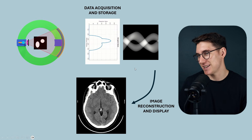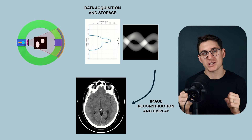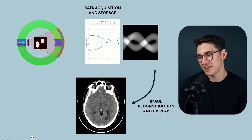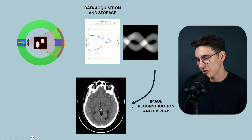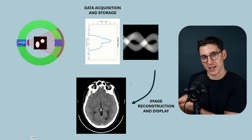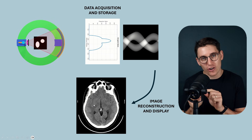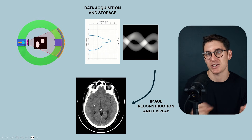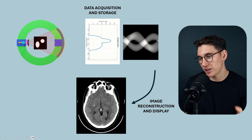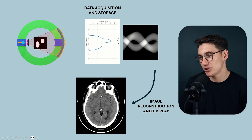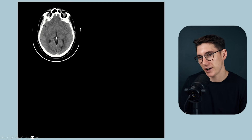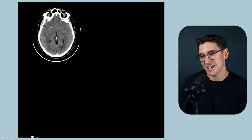The data we've acquired and stored can be processed to create different types of images depending on what we're looking for clinically. Essentially, what we've created is a matrix of attenuation values at specific locations within an array. We're looking at a single slice of a patient, and each pixel within this image correlates to a specific voxel within the patient — a small volume of tissue at a specific location.